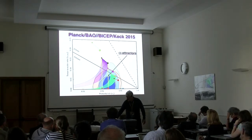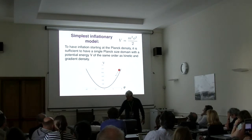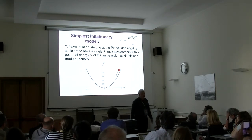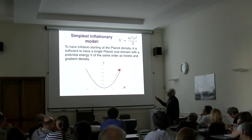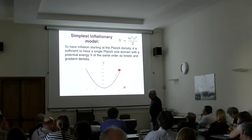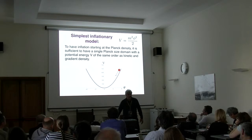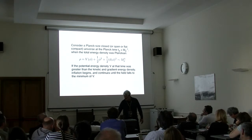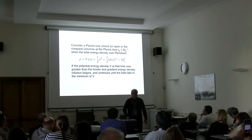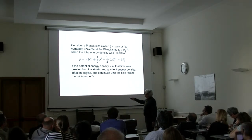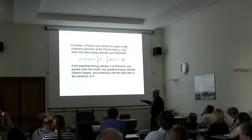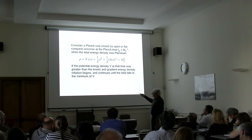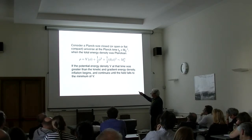These are the alpha attractors described by Renata. What is the interpretation of these yellow curves? Let me return to the simple quadratic model, which with all its simplicity predicts too large gravitational waves. The reason I liked it is that the amplitude of the scalar field potential reaches Planck density — if you start in the Planck domain and just assume that potential by chance is larger than the kinetic and gradient terms, then inflation starts naturally.